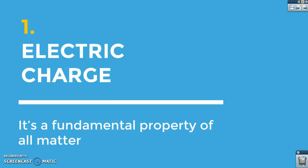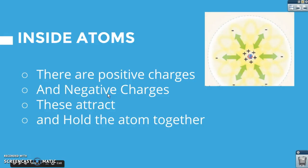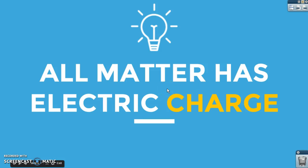Electric charge is one of those fundamental properties of matter — properties like mass, electric charge, gravity, and magnetism. We have three charges: positive, negative, and neutral. The positive charges are inside an atom, the negative charges are inside an atom too, and opposites attract. All the positives are in the nucleus, and the negatives are flying around on the outside. All matter has electric charge — it's a fundamental property of matter.